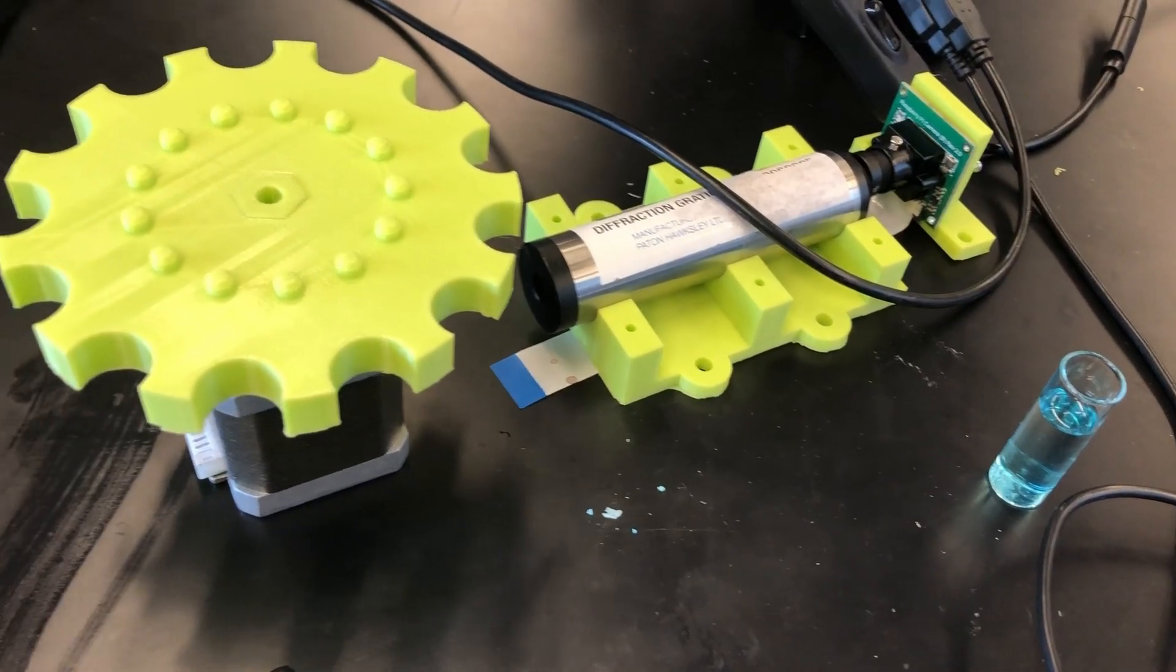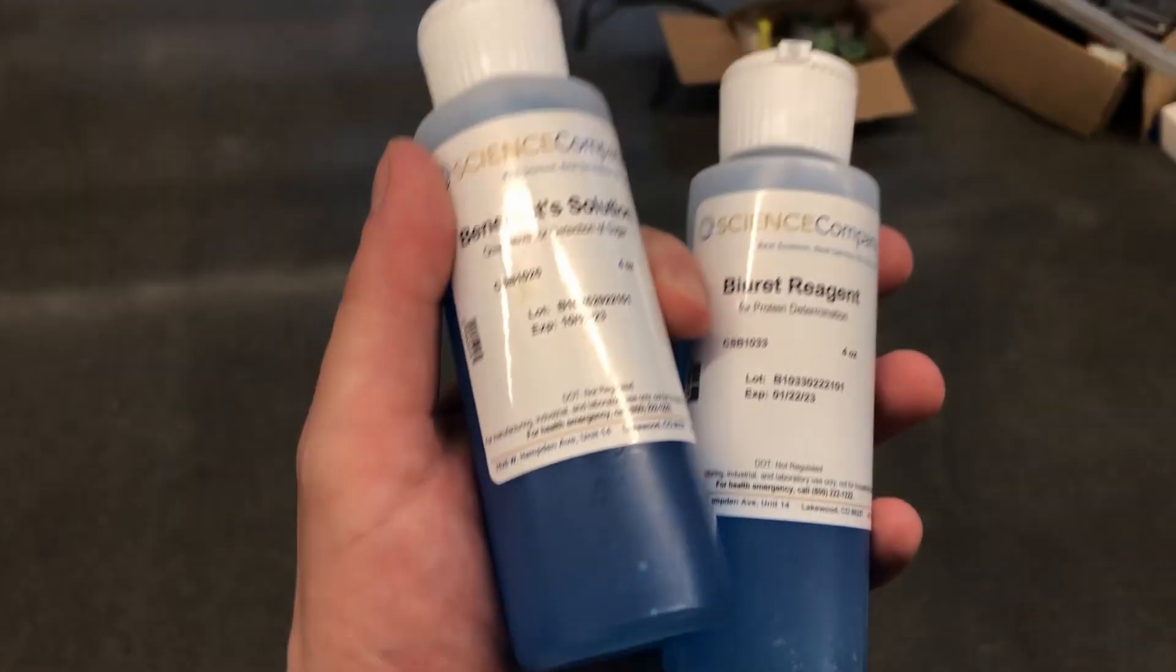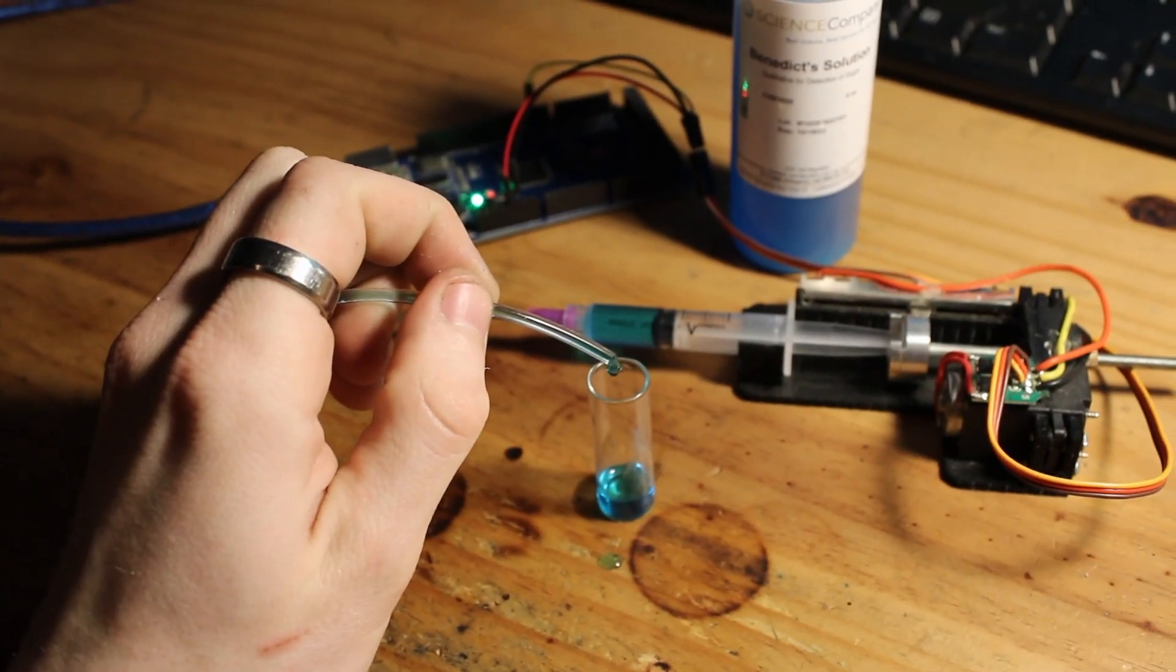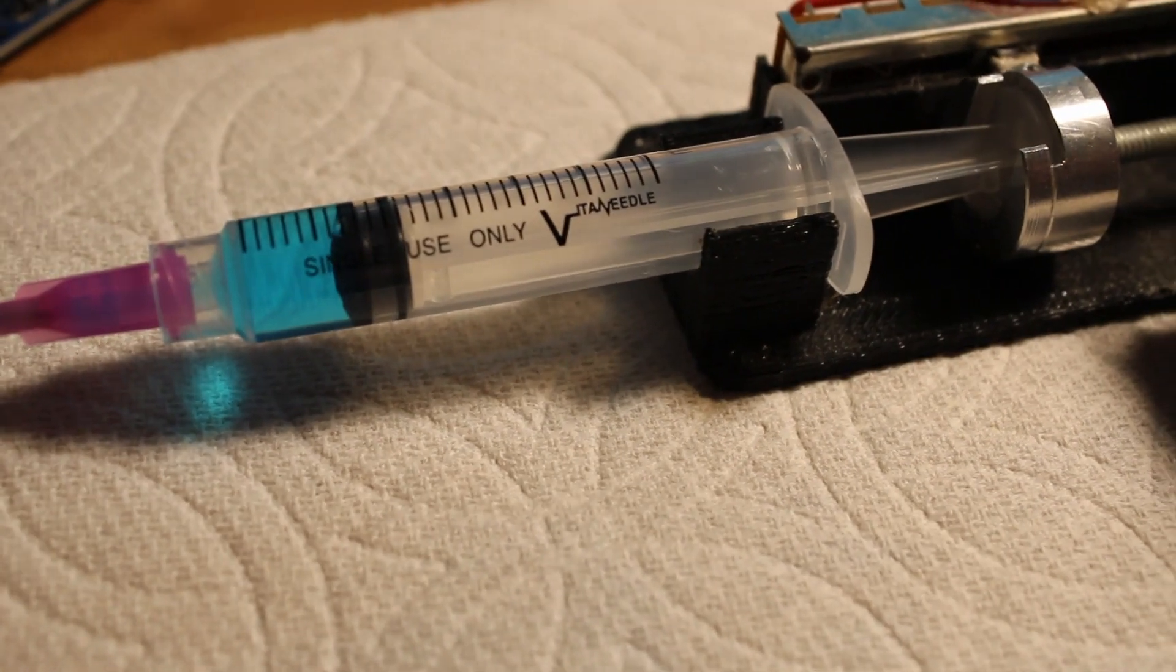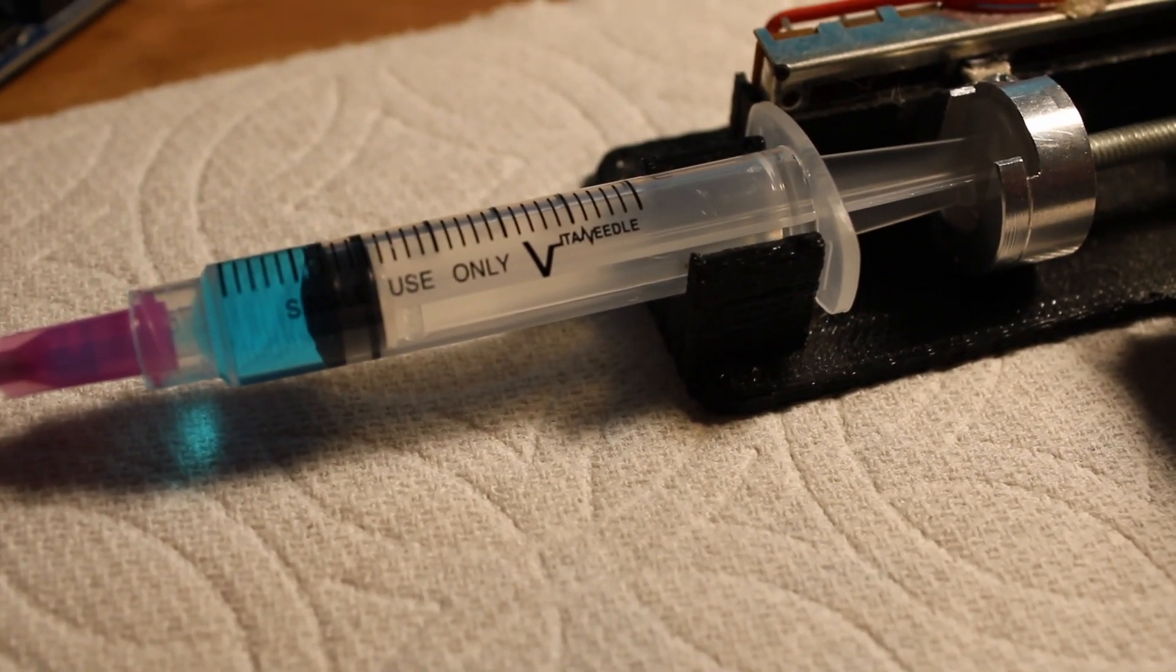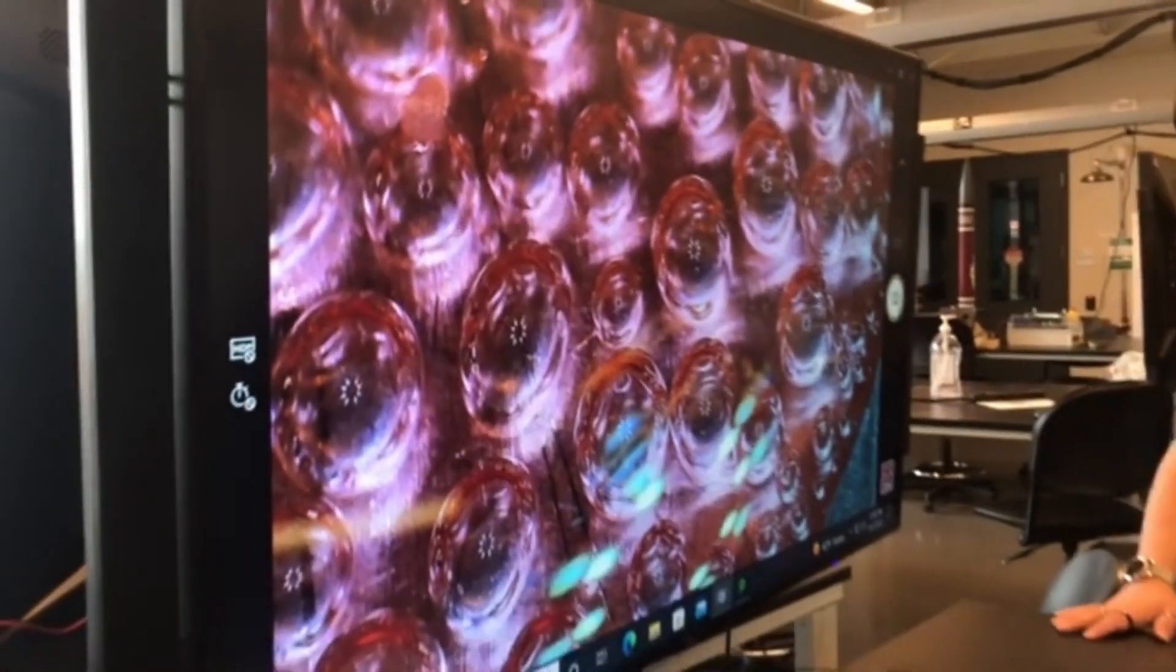Our science module injects test chemicals into test tubes that sit on a rotating chamber. These test chemicals test for the presence of proteins and sugars in the sample. These samples get rotated in front of a diffraction-grating photospectrometer which will beam color readings back to our base.